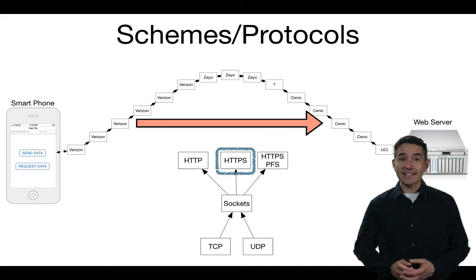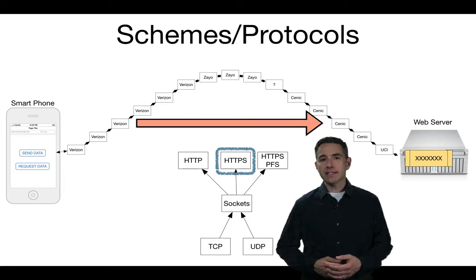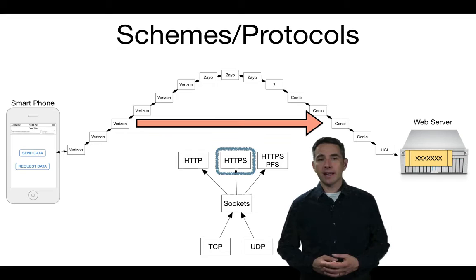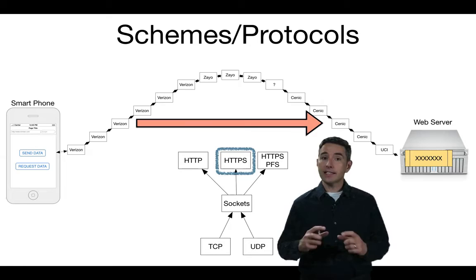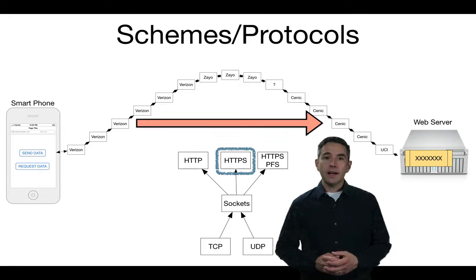HTTP is not the only protocol — you can also use HTTPS. The advantage of HTTPS is that the information being sent from one side to the other is encrypted in flight. As shown in the diagram with X's over the data, computers along the way only know the destination a packet is supposed to reach — they don't know anything about its contents. In that way, HTTPS is more like sending an envelope through postal mail: you can see the destination and return address, but you don't know what's inside unless you open the envelope.